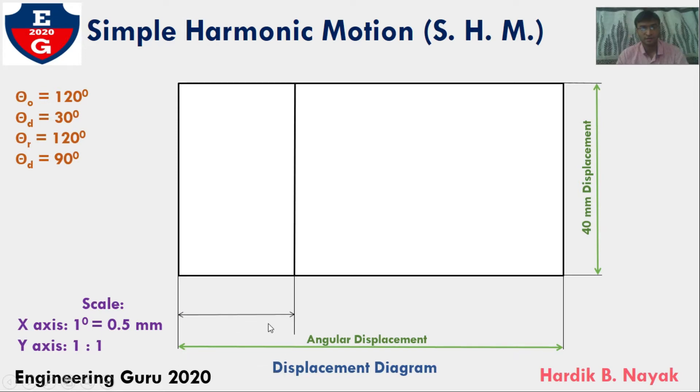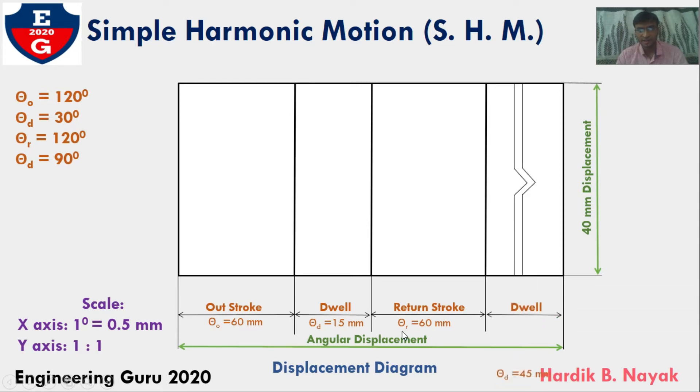For outstroke, theta O equals 60 mm. Dwell, theta D equals 15 mm. Return stroke, theta R equals 60 mm. And final dwell, 45 mm from the scale.